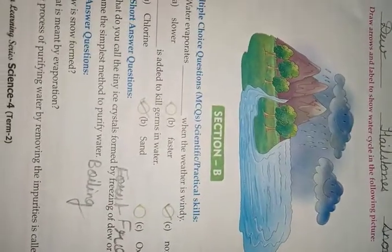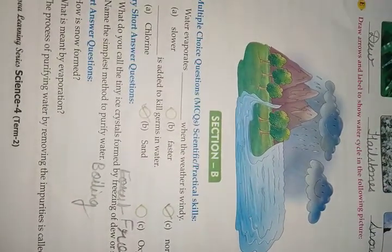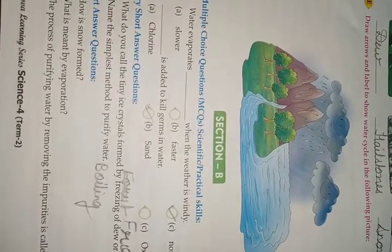How is snow formed? When water vapor freezes in the air, they form tiny flakes of ice — we call that snow. What is meant by evaporation? The change of water into water vapor by heating is called evaporation.